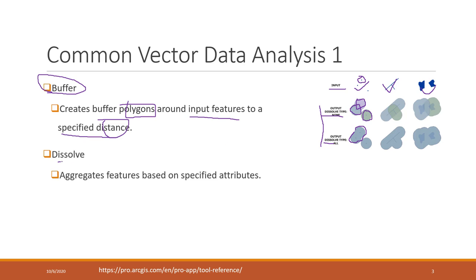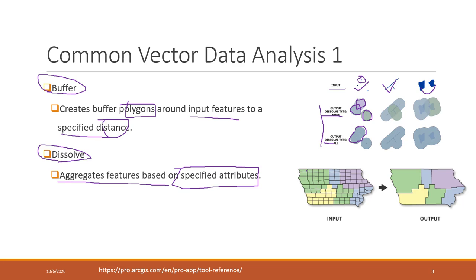Since we're talking about dissolve, dissolve can actually be another separate tool. It will aggregate features based on specific attributes. For example, if we have the population for each single county but we want the population by state, we can dissolve based on the state ID. All the counties that belong to the same state will become one single feature. You can specify how to aggregate those attributes — you can calculate the average, mean, maximum, minimum, etc. That is dissolve.